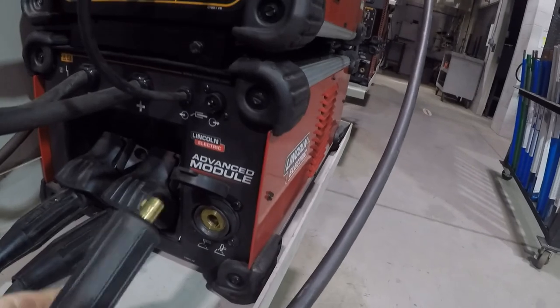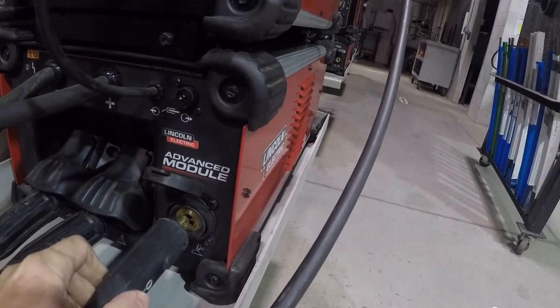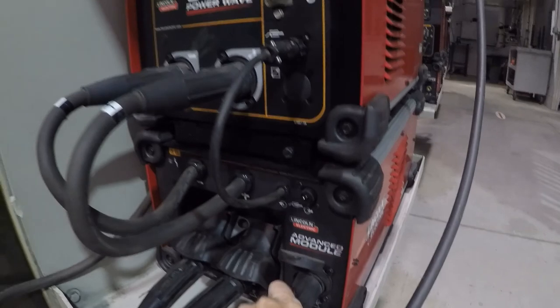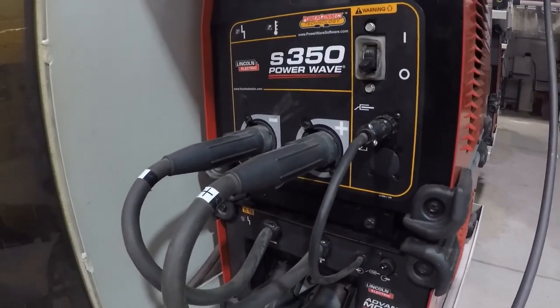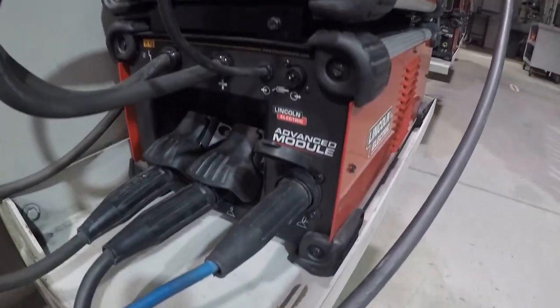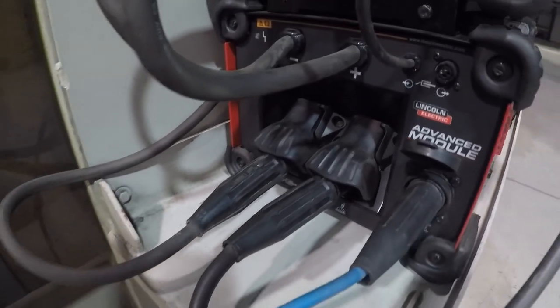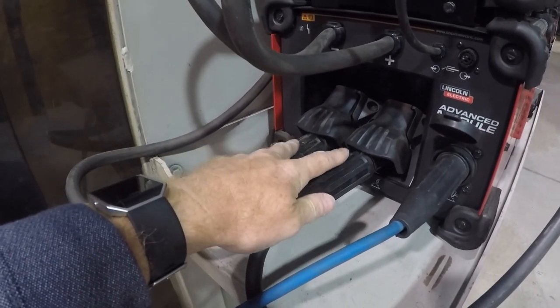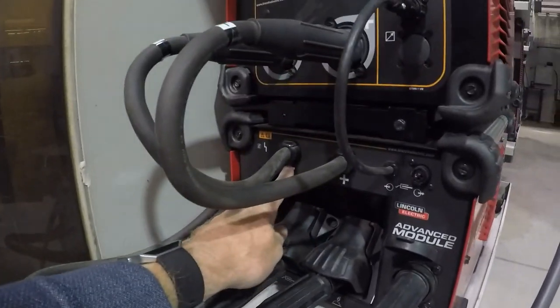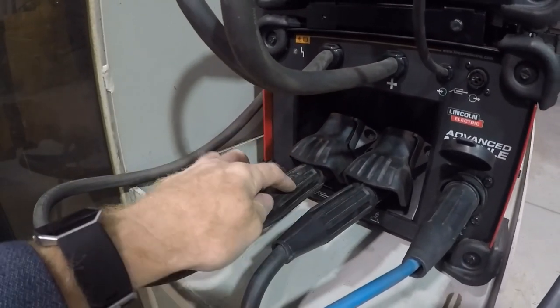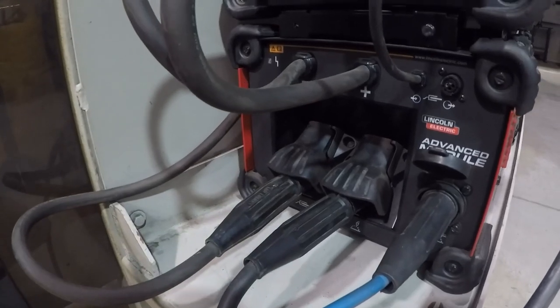Actually you would be able to leave both of these plugged in. I was thinking of the other machines with just the positive up top. If you want to go from negative to positive, you just change these here, so the negative and the positive, same with down here, the work lead negative and the positive, just reversing those.